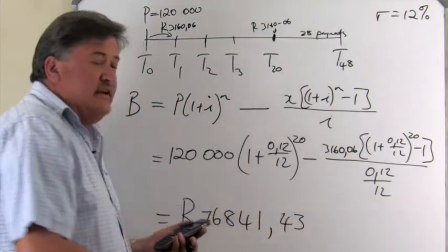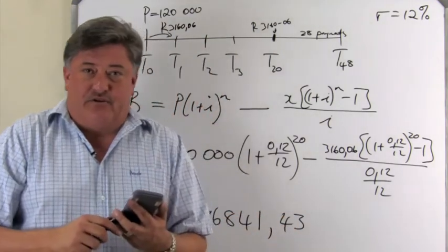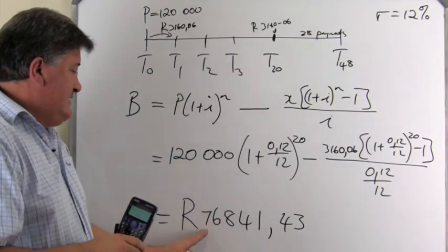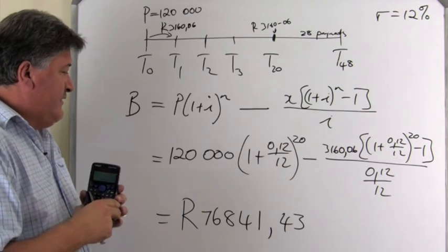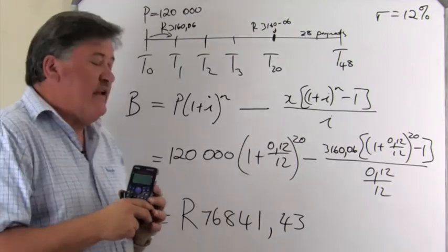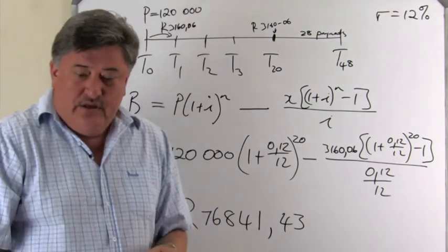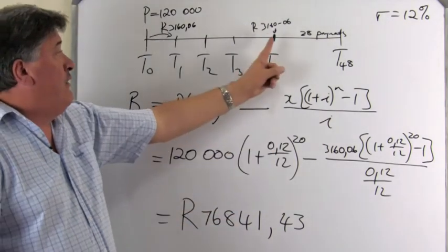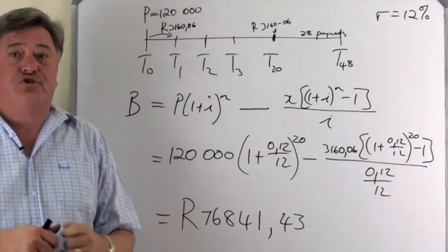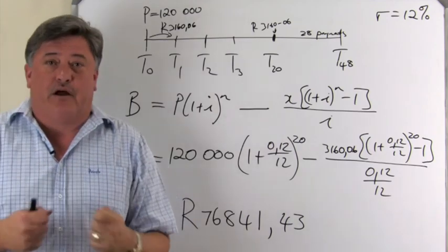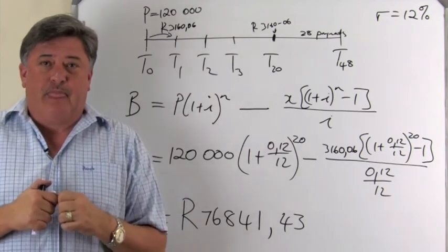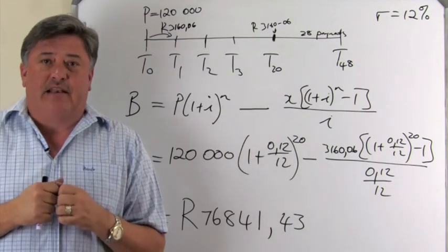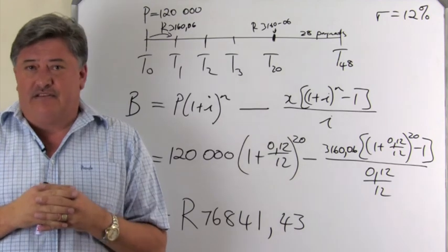It is 76,841.43 cents. Because the third decimal is one, so I'm not going to write it down. It doesn't affect the first two decimals. So, 76,841.43 cents. So, that is what she needs to pay right here. So, that the loan is paid up. Now, that is what Balance Outstanding is all about.